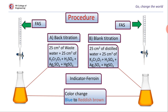This titration is called the back titration. Similarly, one more titration is carried out without wastewater — instead of wastewater, distilled water is taken. The color change is again bluish-green to reddish-brown. In this titration, FAS consumes a greater amount of potassium dichromate compared to the first titration. This titration is known as the blank titration.